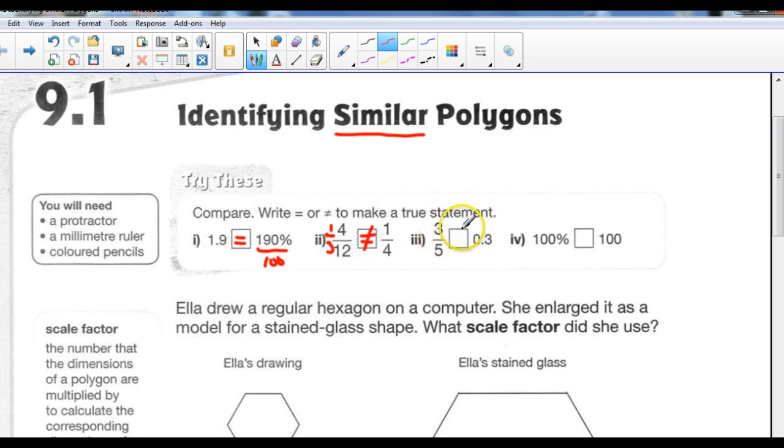3 fifths, is that the same as 0.3? Well, if we take our calculator and do 3 divided by 5, we get an answer of 0.6, not 0.3. So we can say this is not equal to that. And 100% is equal to 100. Well, like over here in question 1, 100% just means it's out of 100. So what's 100 divided by 100? That's equal to 1. Now, is 1 equal to 100? No, it is not.